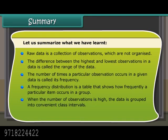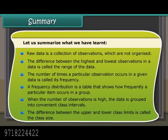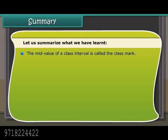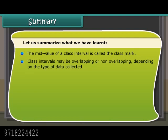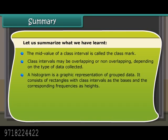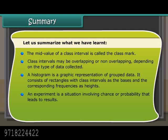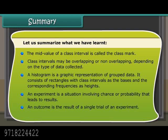When the number of observations is high, the data is grouped into convenient class intervals. The difference between the upper and lower class limits is called the class size. The mid-value of a class interval is called the class mark. Class intervals may be overlapping or non-overlapping depending on the type of data collected. A histogram is a graphic representation of grouped data. It consists of rectangles with class intervals as the basis and the corresponding frequencies as heights. An experiment is a situation involving chance or probability that leads to results. An outcome is the result of a single trial of an experiment. An event is one or more outcomes of an experiment.